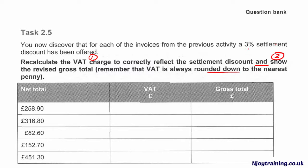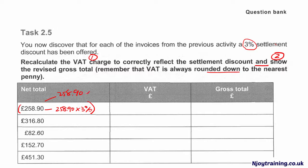The third requirement is to be aware that it's a 3% settlement discount. First of all, we need to find out the revised net amount to be used to calculate our new VAT. So that net amount is going to be 258.90, and times that 3% gives this figure here. Effectively, we could use 258.90 times 97%. Then we times that figure by 20% VAT, and we would have our new VAT here, which is 50.22.